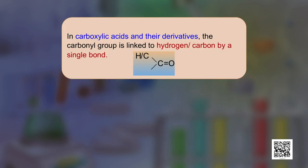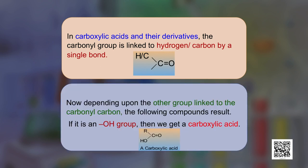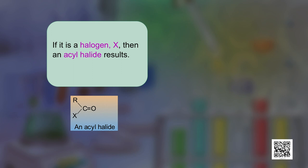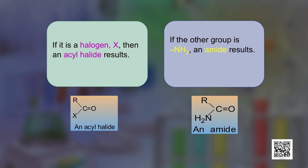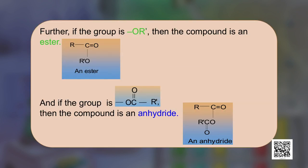In carboxylic acids and their derivatives, the carbonyl group is linked to hydrogen or carbon by a single bond. Depending on the other group attached to the carbonyl group, different compounds result: if this group is an OH group, we get a carboxylic acid; if it is a halogen X, an acyl halide results; if the group is NH2, an amide results; if the group is OR', the compound is an ester; and if the group is RCOO, the compound is an anhydride.